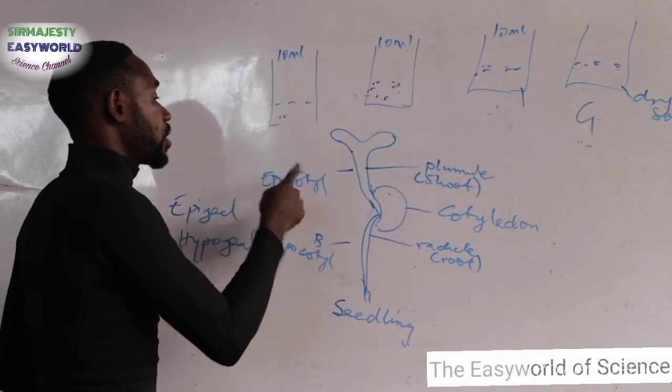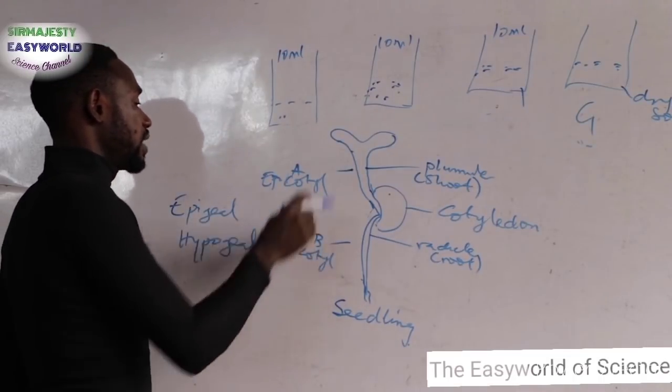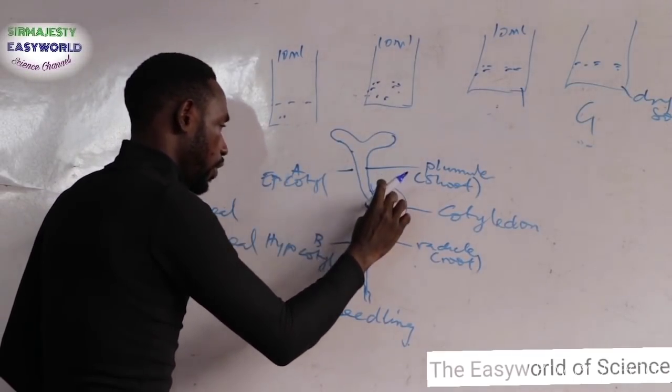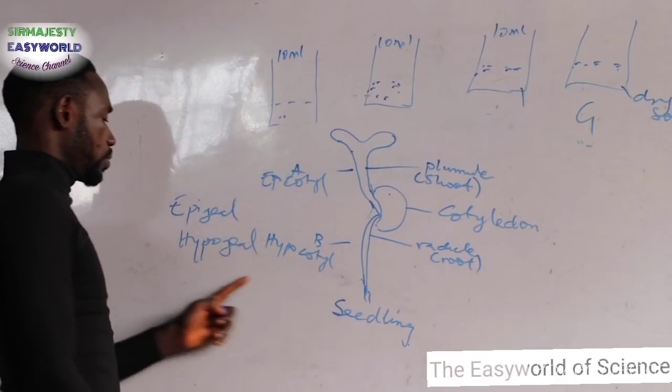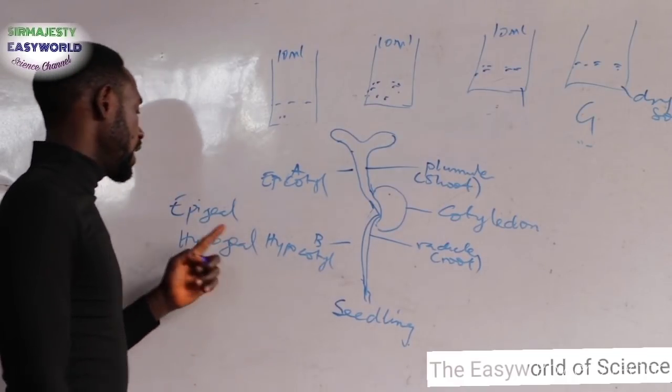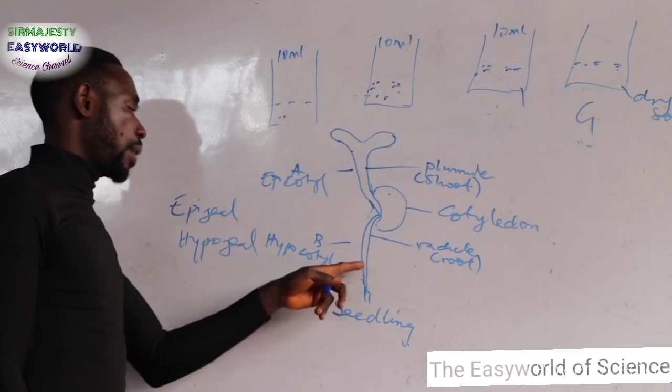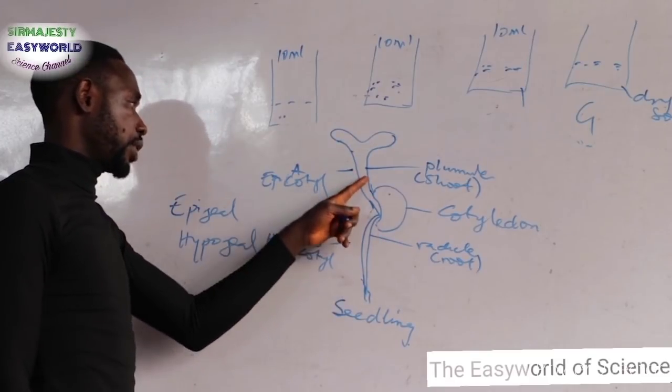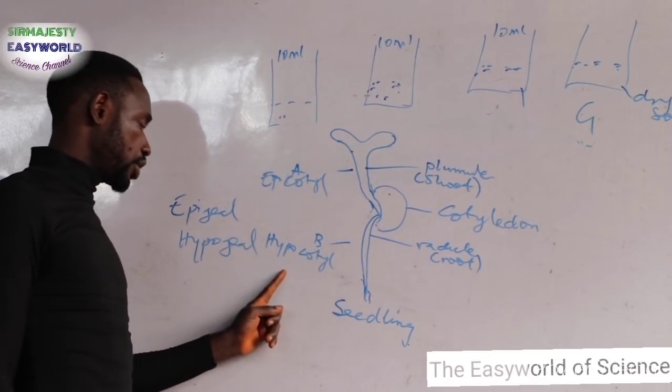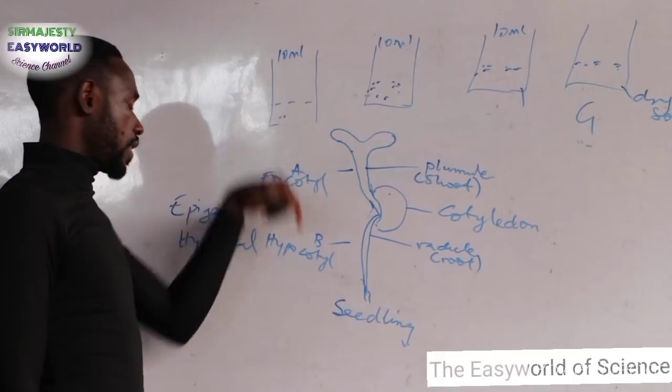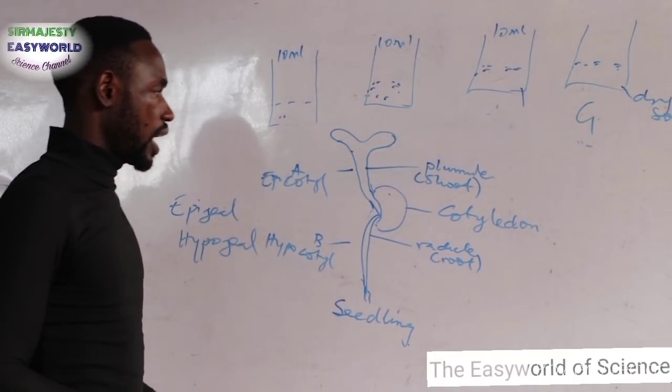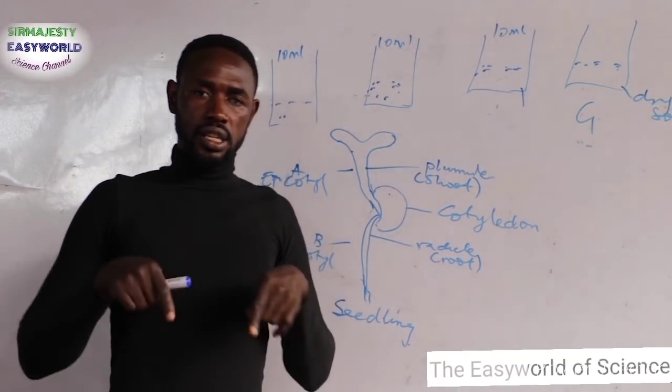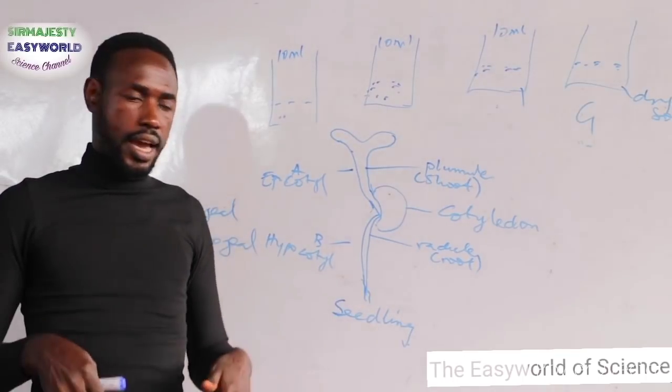The other alternative is hypogeal germination. In hypogeal germination, the epicotyl grows faster than the hypocotyl. Because of that, it's not the epicotyl that pushes the cotyledon out. If epicotyl is growing faster, it shows that this seed leaf or cotyledon will remain inside the soil. And that's what we call hypogeal.